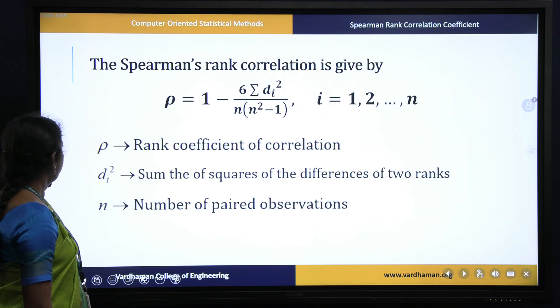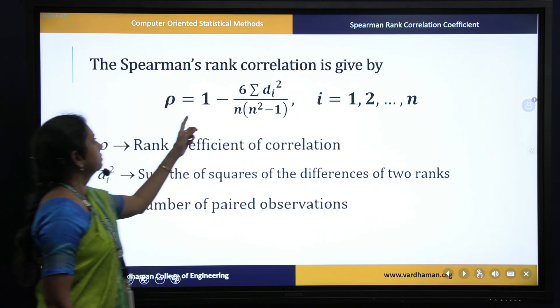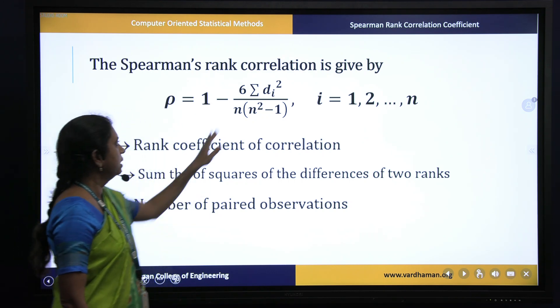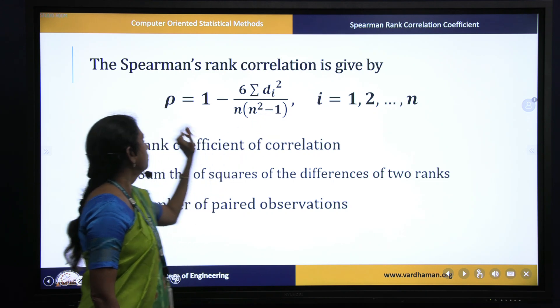So what is the formula of Spearman rank correlation? The formula is given by 1 minus 6 into summation di square by n into n square minus 1.